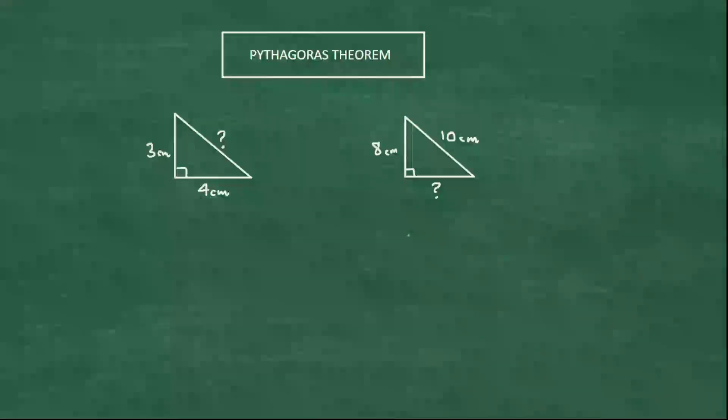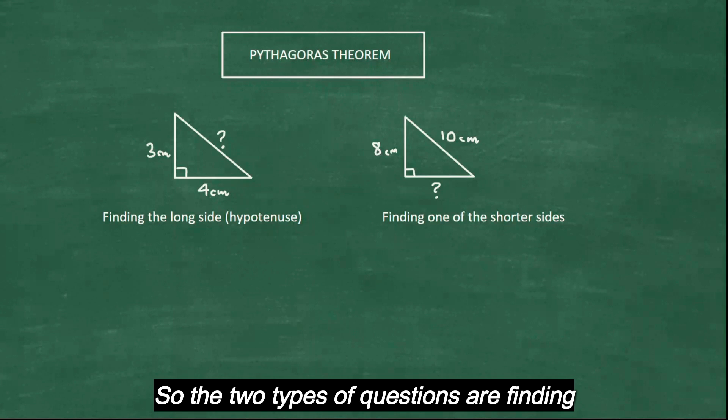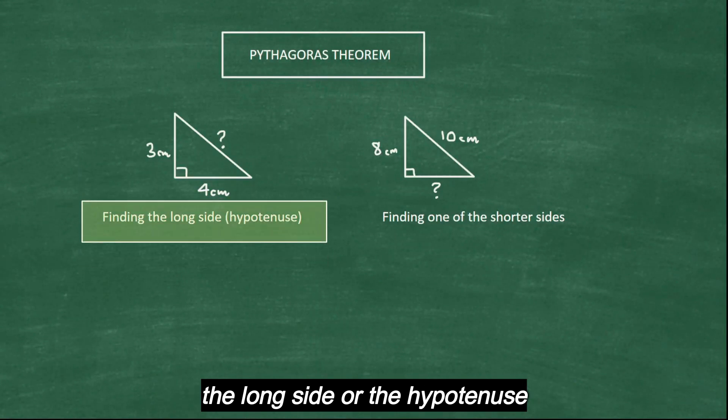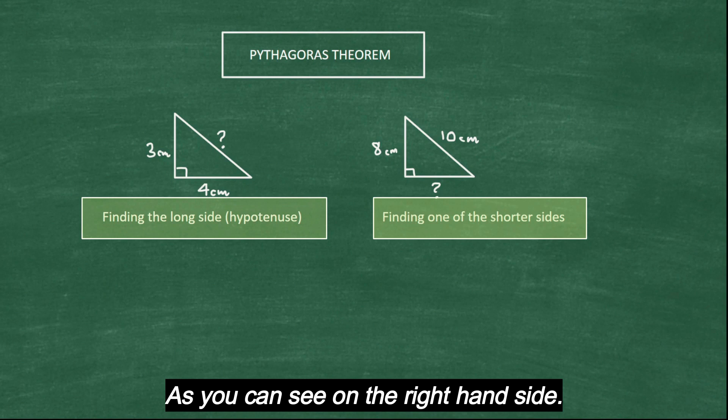We have two shorter sides, one of them. That's all you can get. So the two types of questions are finding the long side or the hypotenuse or finding one of the shorter sides as you can see on the right hand side.